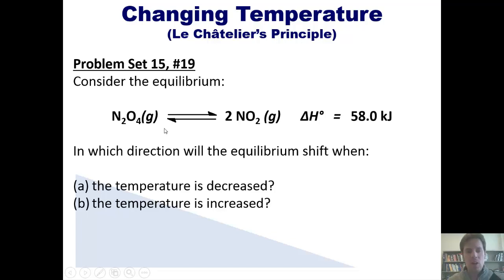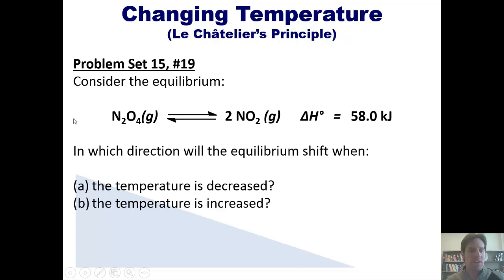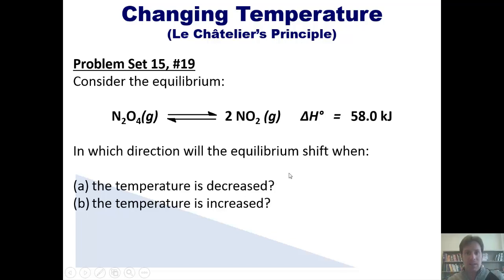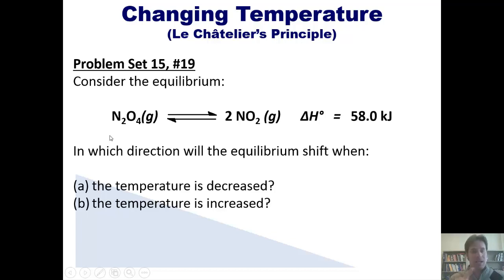Here's the answer. You'll notice that in this equilibrium reaction, as it is written, the delta H is positive — it's an endothermic reaction. That means I can treat heat as a reactant, so I could write heat on the left side of the equation. Now I just treat everything the way I would if I were changing concentrations. If temperature is decreased, that means I'm removing heat from it. Heat is on the left side of this reaction because it's endothermic. So imagine if I removed heat, leaving a gaping hole on the left side of the reaction. In which direction will the reaction shift? It's going to shift to the left.